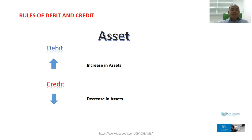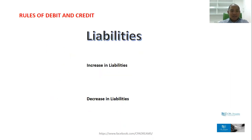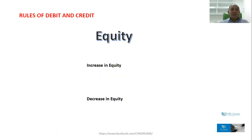For liabilities: an increase in liabilities will be credit. A decrease in liabilities is debit. What about equity? It is the same as the liability. Decrease in equity, it will be credit. And decrease in equity, it will be debit.